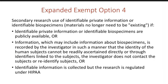Let me go over a few options on expanded exempt option four. Secondary research use of identifiable private information or identifiable biospecimens could be performed if the identifiable private information or identifiable biospecimens are publicly available, or if information — which may include information about biospecimens — is recorded by the investigator in such a manner that the identity of human subjects cannot be readily ascertained directly or through identifiers linked to the subjects, and the investigator does not have to contact or re-identify the subjects. Or one could do secondary research on identifiable information that is collected but the research is regulated under HIPAA.